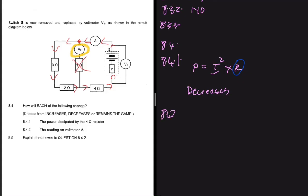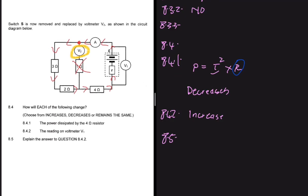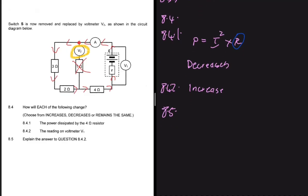Question 8.4.2 asks about the reading on V1. The reading on V1 is going to increase, and we'll explain why. In an electric circuit, EMF equals IR (external) plus I multiplied by small r, representing V_external and V_internal respectively.